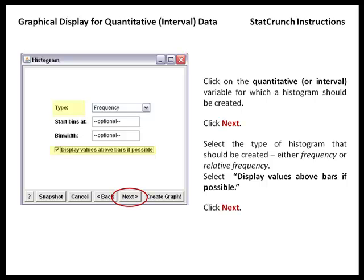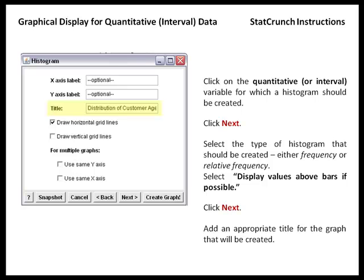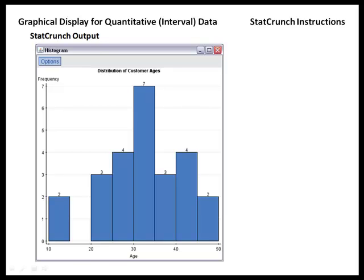If we click Next several times, you'll get to the screen where you can add an appropriate title for the histogram that's going to be created. Then we can select Create Graph, and in the output that appears you'll see the following histogram.